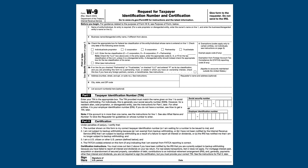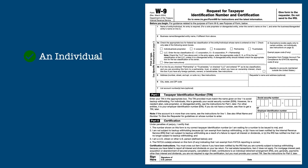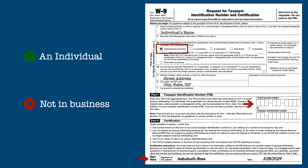Rather than explain how to fill out the form in general, let's look at several different scenarios and see how the form is filled out for each one. For an individual that is not in business, the individual's name is entered on line 1, the individual/sole proprietor box is checked, and a Social Security Number is entered in Part 1. The individual signs the form in Part 2.